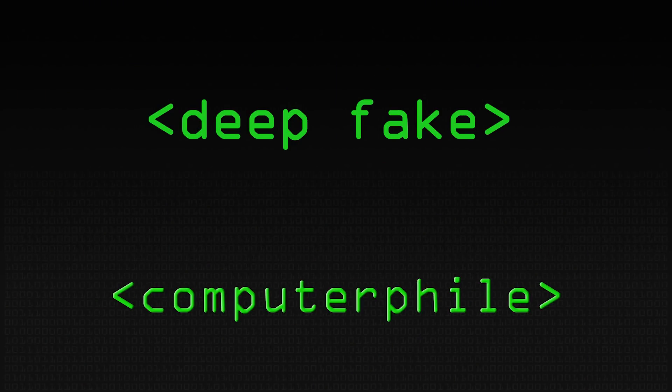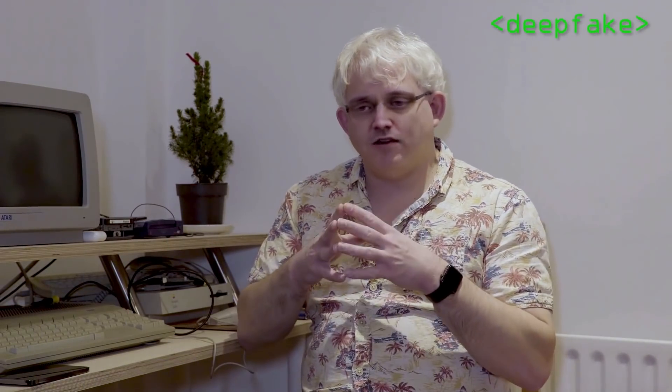Deepfakes are usually trained with a lot of pictures of one person and another person, and a network learns to basically convert them over. One of the things about being on Computerphile is we have quite a back catalogue of videos of, for example, me and Steve. So I had a go at this — I trained it up and it's the stuff of nightmares. It doesn't work amazingly all the time; it doesn't handle when the view goes off. But for something where I basically just put in a bunch of source material, it just kind of did it. That's pretty impressive.